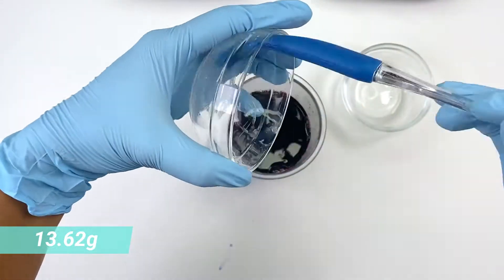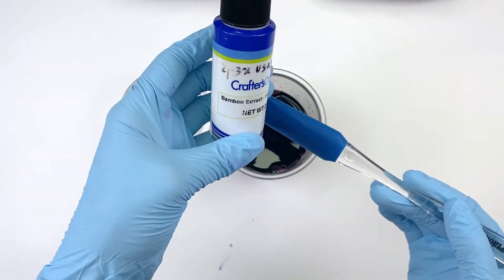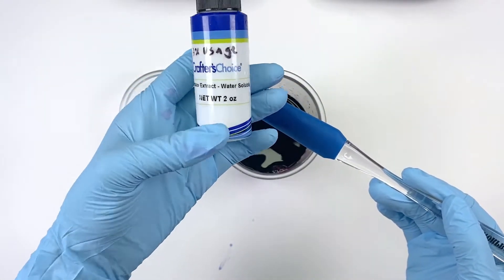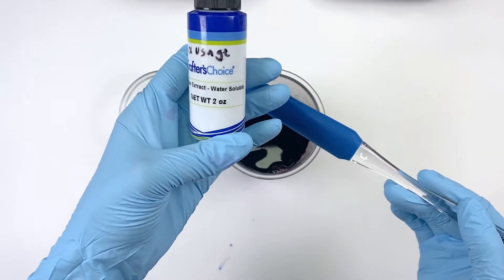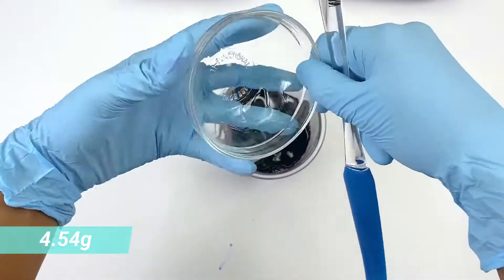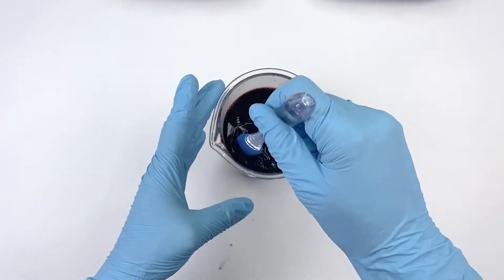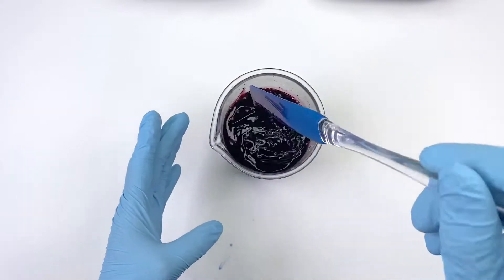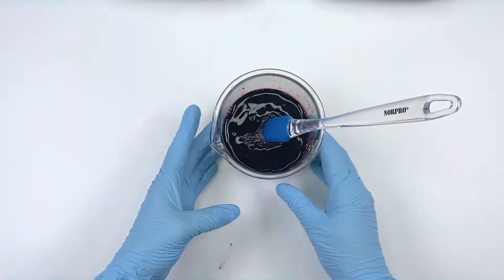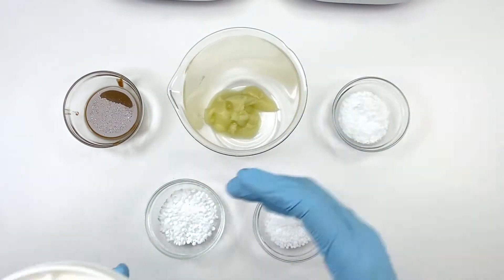This is bamboo extract, and you guys are going to see me use this quite a bit now. Bamboo extract helps strengthen the hair. It's 4.54 grams of bamboo extract. Now we're just mixing and we're going to be moving on to the oil phase.